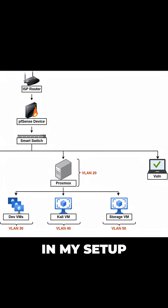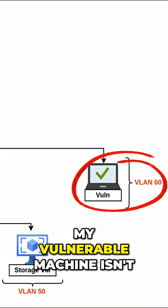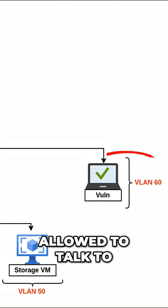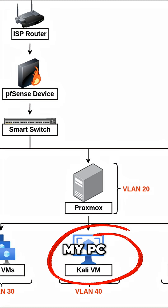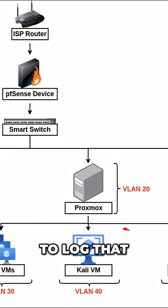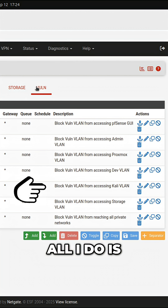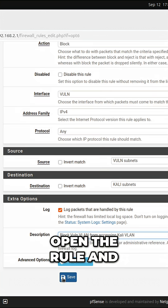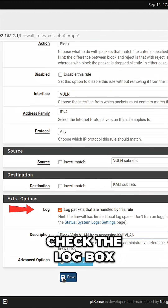In my setup, for example, my vulnerable machine isn't allowed to talk to my PC. To log that, all I do is open the rule and check the log box.